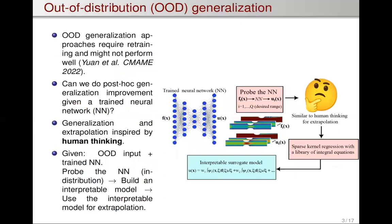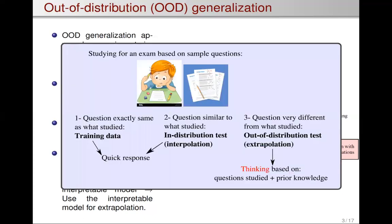How can we do generalization to out-of-distribution data and extrapolation? There are different ways to achieve this in the literature with different success, but the issue with most of these approaches is that they often require retraining the neural network. Our idea was: can we develop a generalization improvement strategy that doesn't require retraining and could be done completely in a post-processing step? We were inspired by the process of human thinking in designing this strategy.